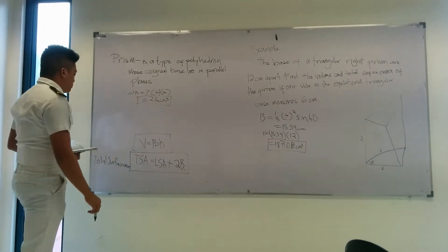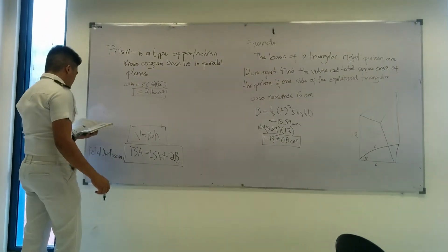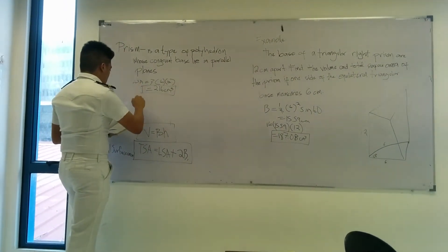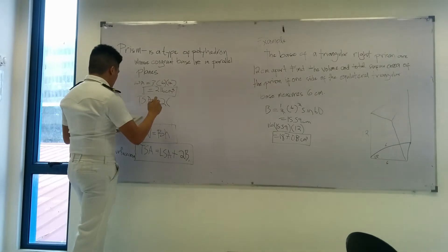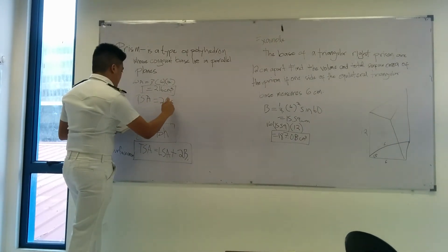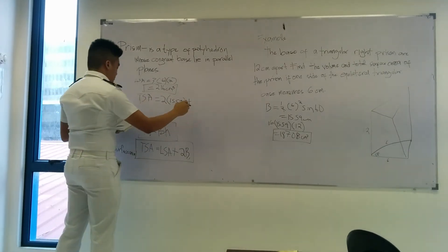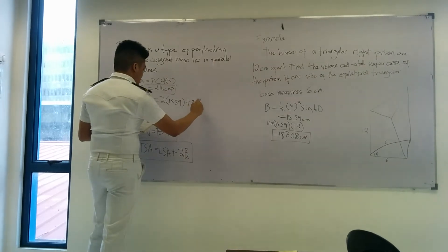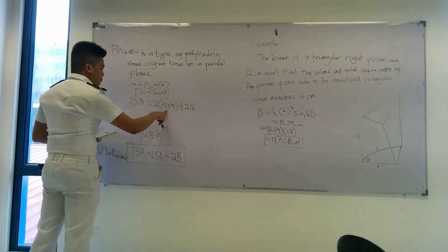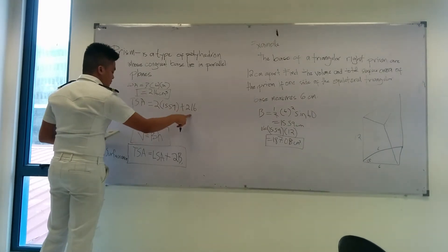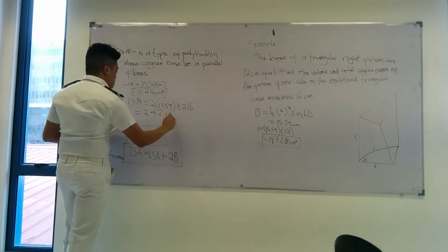To get the total surface area, use this formula. This is equal to LSA plus 2B. The TSA is equal to 15.59 plus the 216 LSA. This is the formula for getting the LSA. And that will be 2 times base to base. And you will get 247.18 square centimeters.